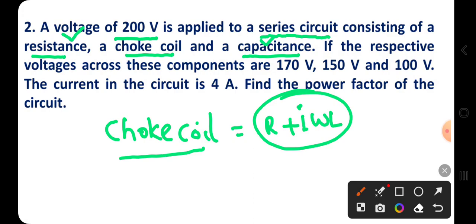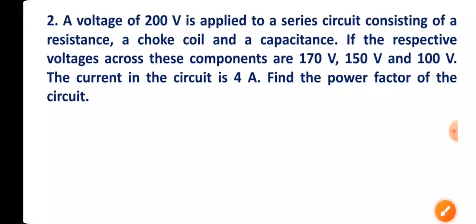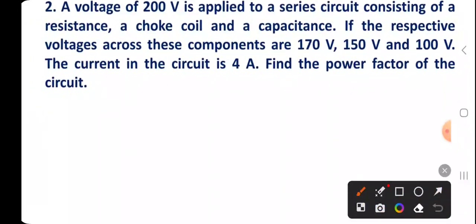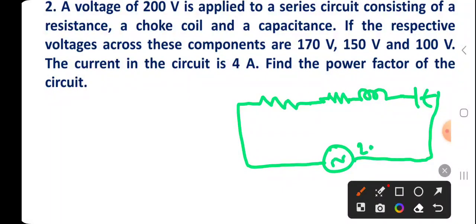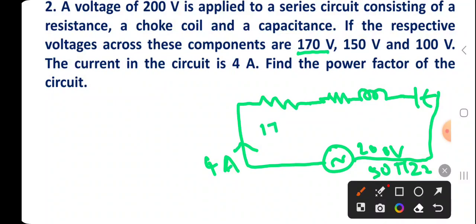If I draw the circuit diagram, it may look like this: there is resistance, then the choke coil, which is the combination of another resistance and inductance, and then the capacitor — all connected across 200 volts, 50 Hz AC supply. The default frequency is assumed to be 50 Hz. The current is given as 4 amperes. The voltage across the resistance is 170 volts, voltage across the choke coil is 150 volts, and voltage across the capacitance is 100 volts.